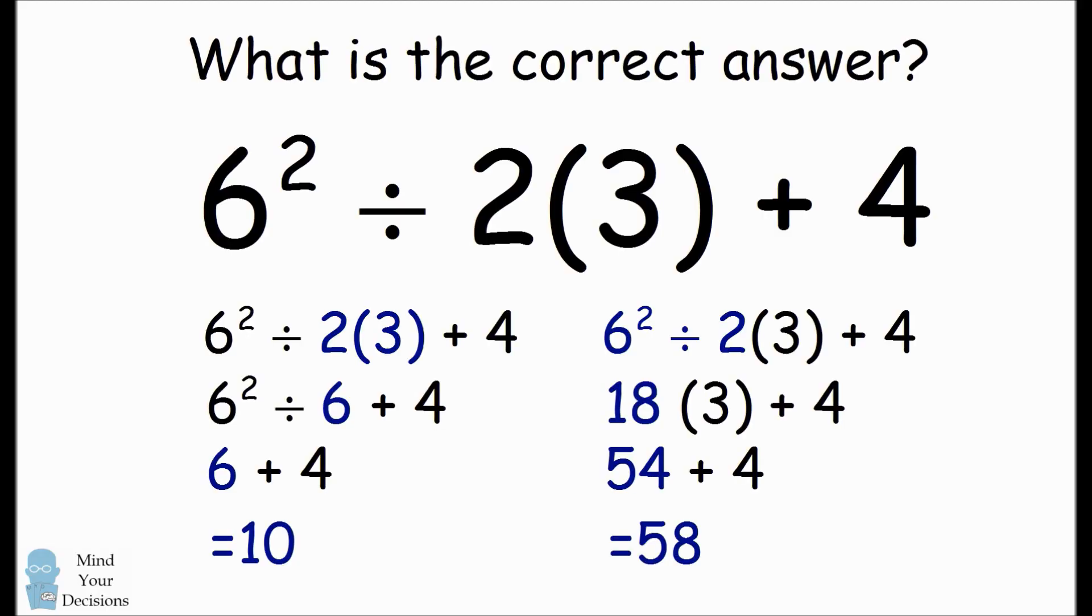All right that should settle the debate. Between these two interpretations of the problem the answer of 58 is more consistent with the common customs of mathematical expressions. Just because the 2 and the 3 have a parentheses next to each other doesn't mean we necessarily evaluate it first. That parentheses around the 3 is interpreted as a multiplication sign and by the order of operations it makes more sense to evaluate this from left to right.